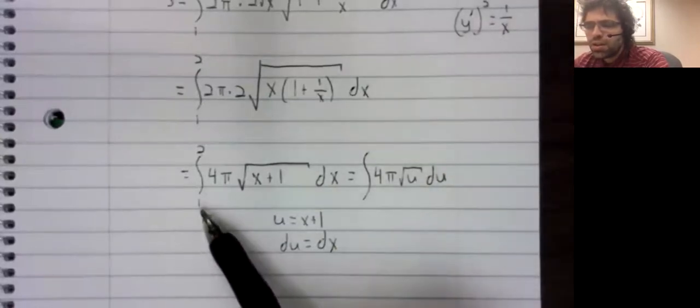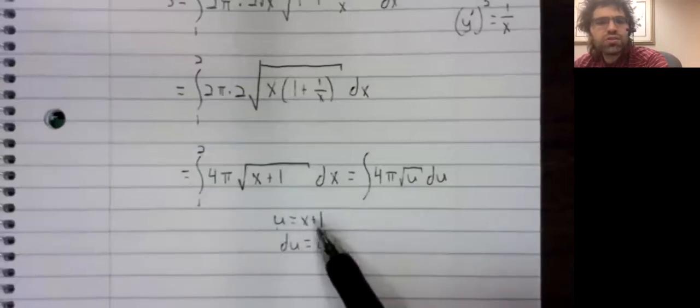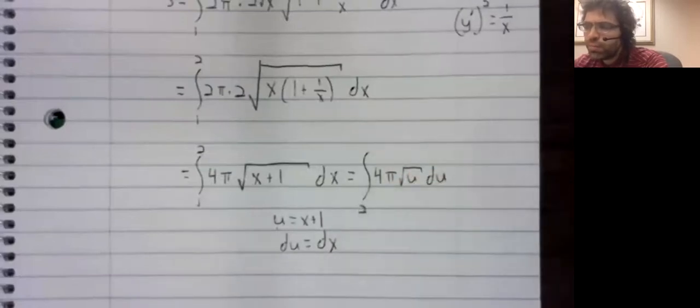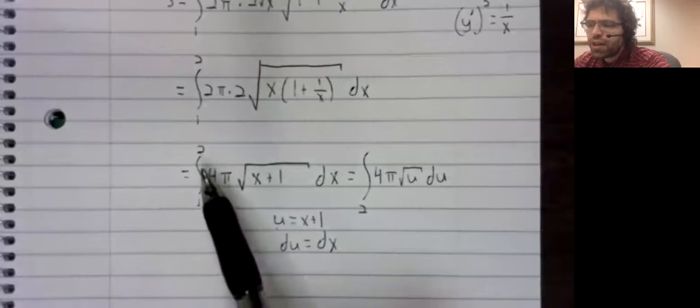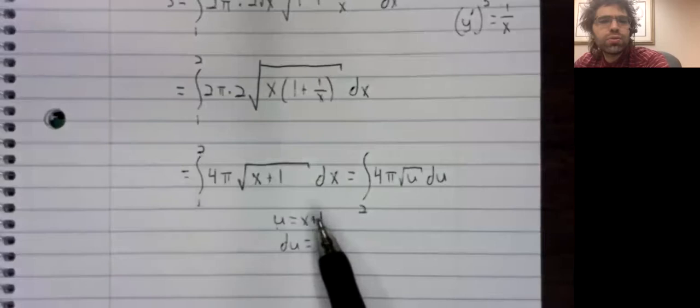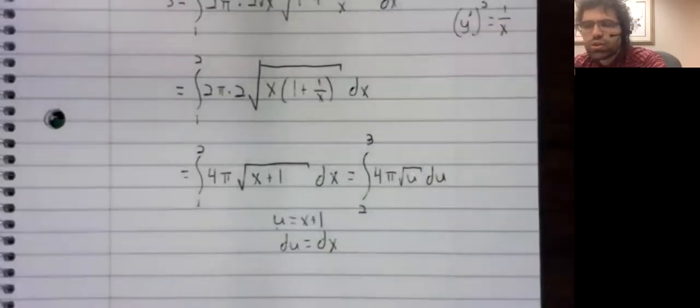If x equals one, u equals one plus one or two. If x equals two, u equals two plus one or three.